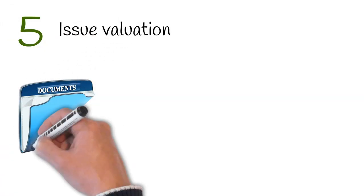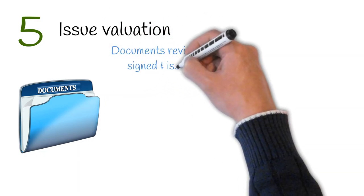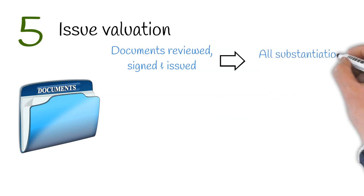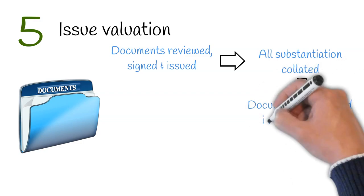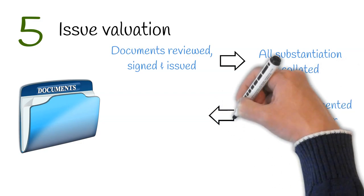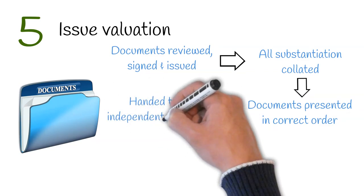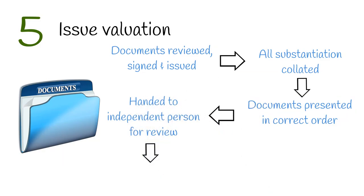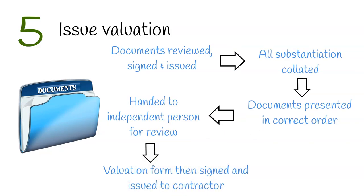Stage 5: Issue Valuation. In this stage, the valuation documentation is reviewed, signed and issued. This is assembled with any other relevant valuation documents. The documents need to be in the correct order, i.e. covering letter, valuation form, contractor's application for payment, together with any schedule of adjustments and narrative. The documents will then need to be given to an independent person to review for any last minute adjustments to be made. The valuation form is then signed and issued to the contractor.